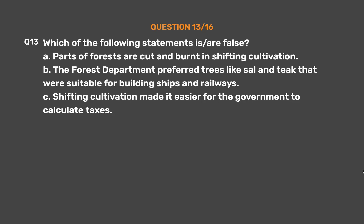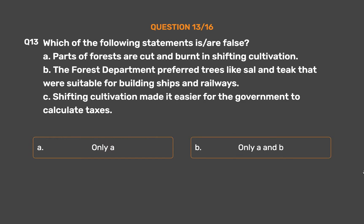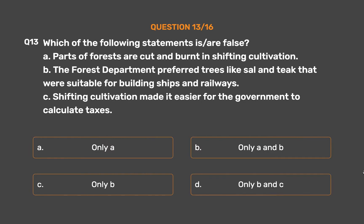Question 13: Which of the following statements is/are false? A: Parts of forests are cut and burnt in shifting cultivation. B: The forest department preferred trees like Sal and Teak that were suitable for building ships and railways. C: Shifting cultivation made it easier for the government to calculate taxes. Option A: Only A. Option B: Only A and B. Option C: Only B. Option D: Only B and C.